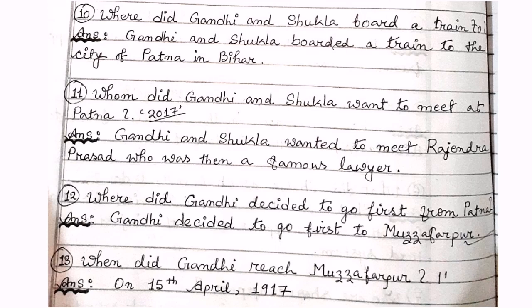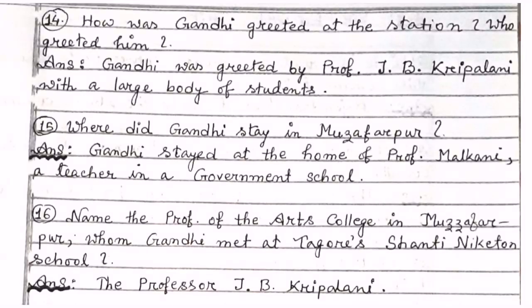Number twelve: where did Gandhi decide to go first from Patna? Gandhi decided to go first to Muzaffarpur to gather complete information about the injustice prevailing in Champaran. Number thirteen: when did Gandhi reach Muzaffarpur? Gandhi reached Muzaffarpur in 1917, on the 15th of April. How was Gandhi greeted at the station? Gandhi was greeted by Professor J.B. Kripalani with a large body of students.